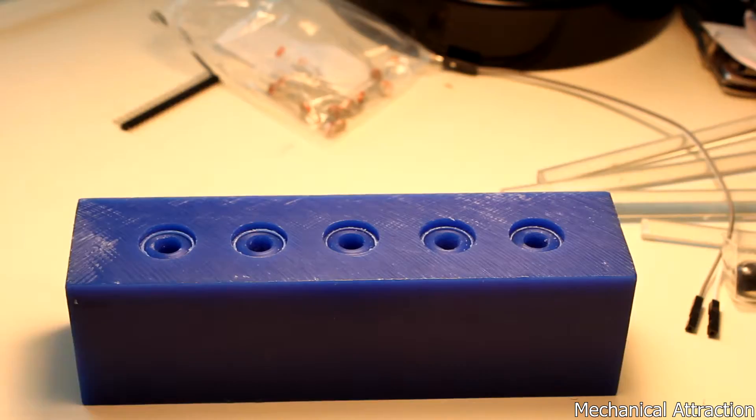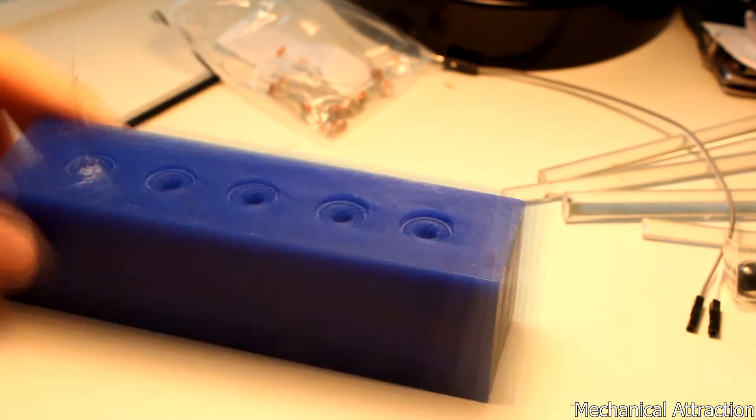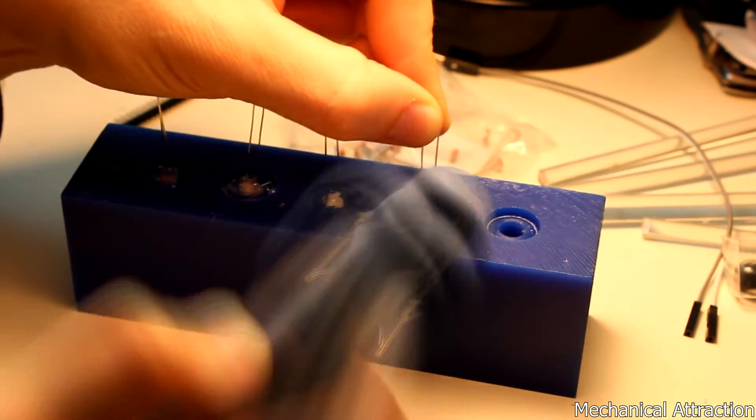For the receiving side, I just took the photoresistors and hot glued them into the quarter inch holes that I previously had drilled.